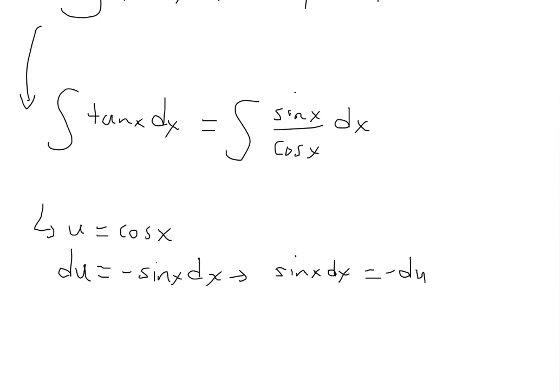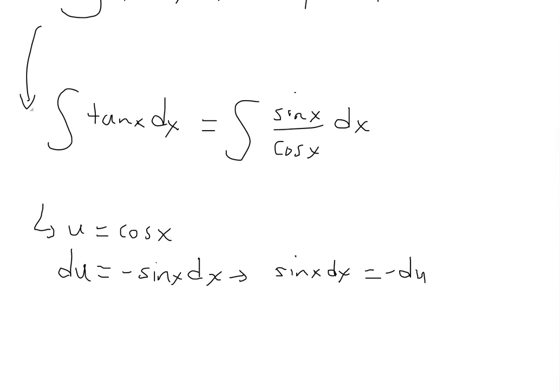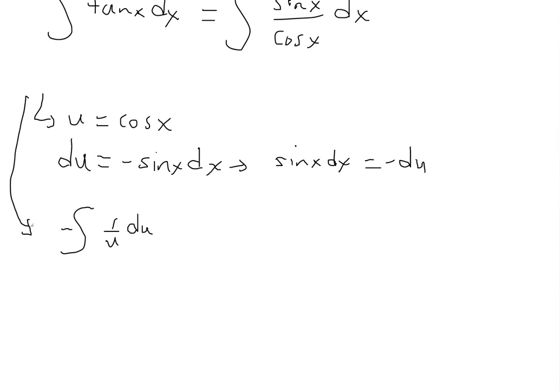So now we can just basically plug everything back into this function. So we'll get the integral of 1 over u, and then this sine x dx is negative du. So we can put the negative out here, and now we'll have du. So now we can just find the integral of this or the anti-derivative of 1 over u.